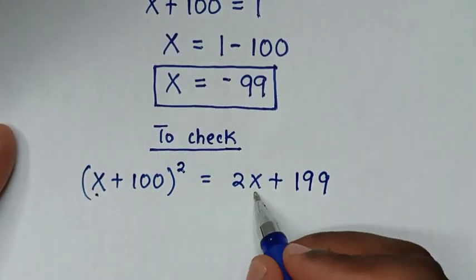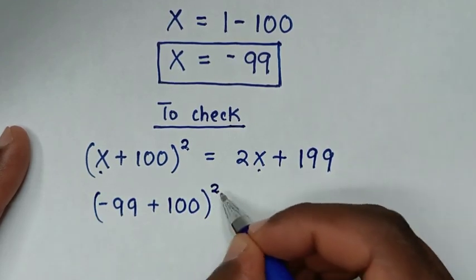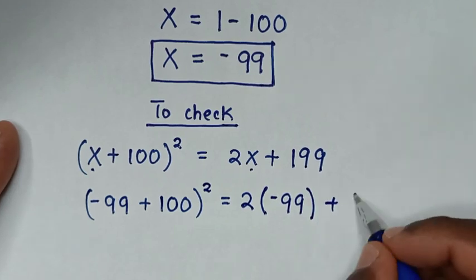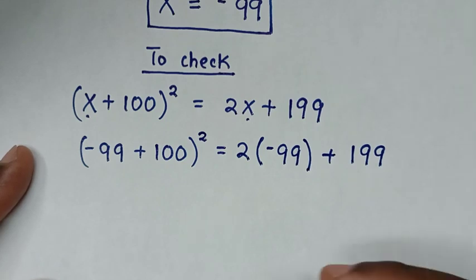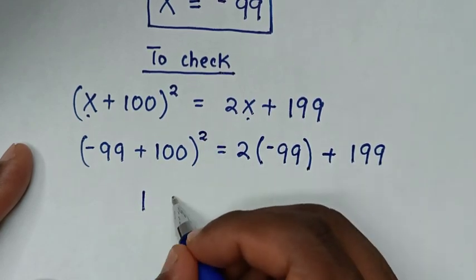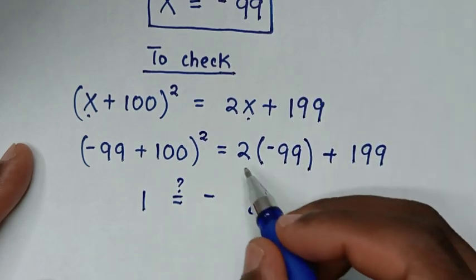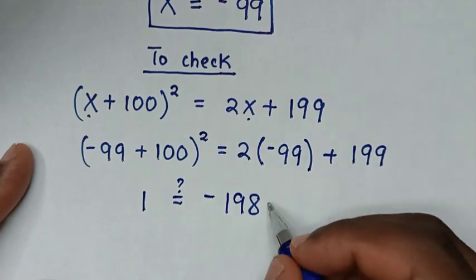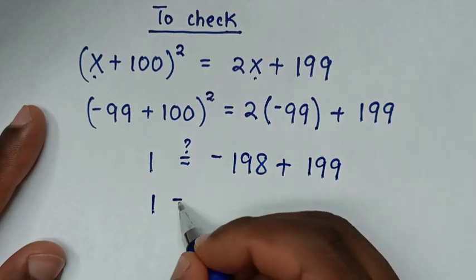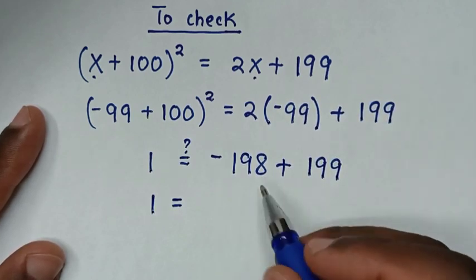Substituting x = -99: (-99 + 100)² = 2(-99) + 199. The left side gives 1² = 1. The right side gives -198 + 199 = 1. Left side equals right side, confirming x = -99 is correct.